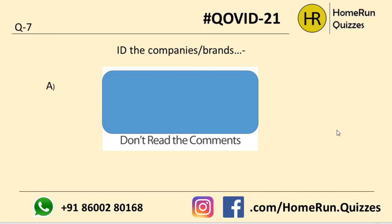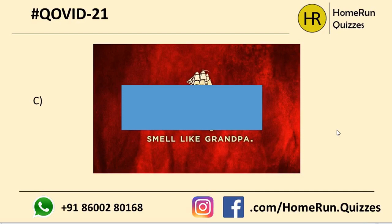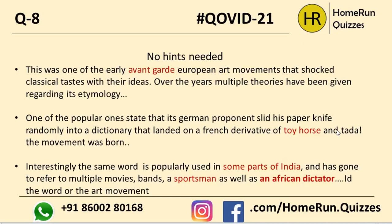Question number seven: ID the brands — pretty alternative slogan-ish stuff. 'Don't read the comments' — it's YouTube, of course; especially don't read the comments below 'Baby' by Bieber. 'Connect with people for no reason at all' — it has to be LinkedIn, right? Like people have some reason, but a lot of times it does not materialize. 'Smell like grandpa' — this is Old Spice with the signature ship logo.